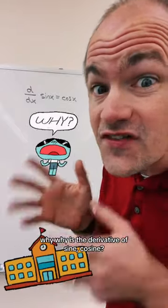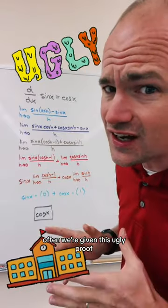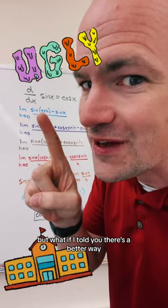Why? Why is the derivative of sine cosine? Often we're given this ugly proof, but what if I told you there's a better way?